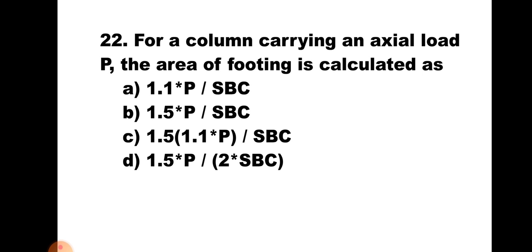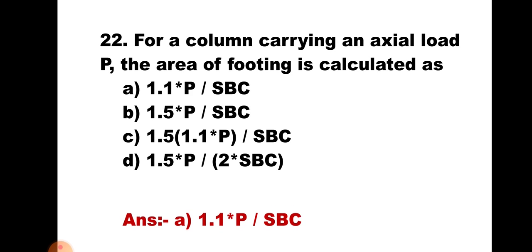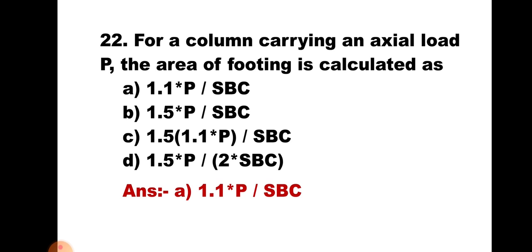Question number 22. For a column carrying an axial load P, the area of footing is calculated as: A) 1.1P divided by SBC of soil, B) 1.5P divided by SBC of soil, C) 1.5 × 1.1P upon SBC, or D) 1.5P upon 2 times SBC. While calculating the area of footing, the working load on the column plus 10% as self-weight of the footing gives 1.1P divided by safe bearing capacity of the soil. Hence the correct answer is A, 1.1P upon SBC.